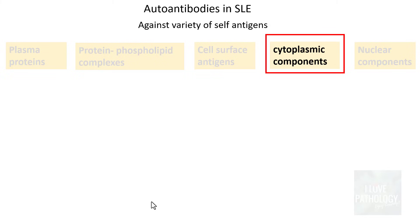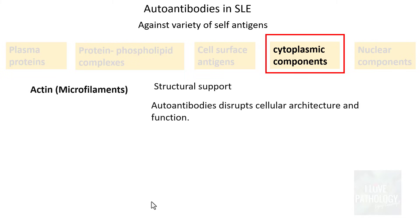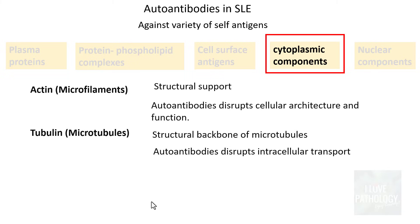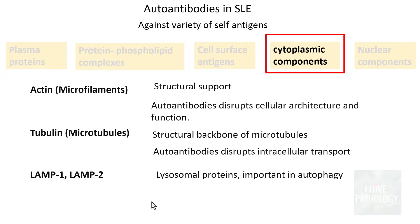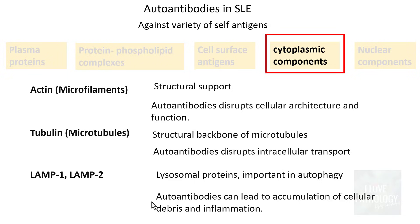The next category is cytoplasmic components. First, actin — a microfilament providing structural support — autoantibodies against actin disrupt cellular architecture and function. Second, tubulin — a microtubule component — autoantibodies can disrupt intracellular transport. Third, LAMP1 and LAMP2 — lysosomal membrane proteins important in autophagy — autoantibodies against these lead to accumulation of cellular debris, since autophagy is impaired, resulting in more inflammation.